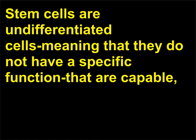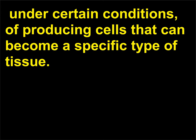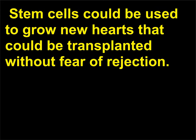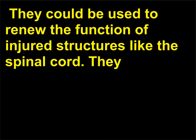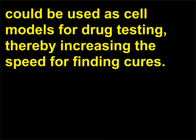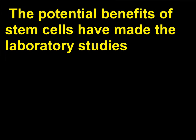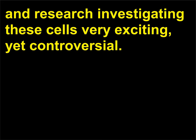What are stem cells and what are some potential uses? Stem cells are undifferentiated cells — meaning they do not have a specific function — that are capable, under certain conditions, of producing cells that can become a specific type of tissue. Stem cells could be used to grow new hearts for transplant without fear of rejection, to renew the function of injured structures like the spinal cord, or as cell models for drug testing to increase the speed of finding cures. The potential benefits of stem cells have made laboratory studies very exciting, yet controversial.